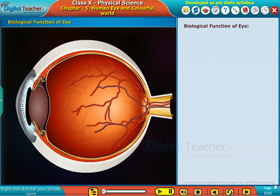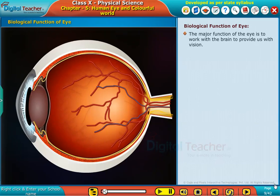Let us know about the biological function of the human eye. The major function of the eye is to work with the brain to provide us with vision.